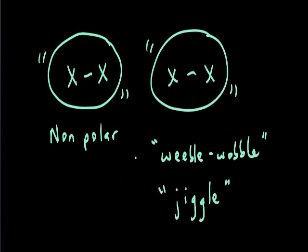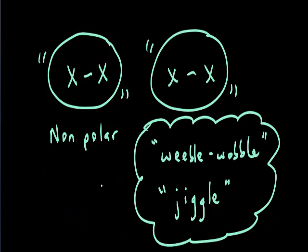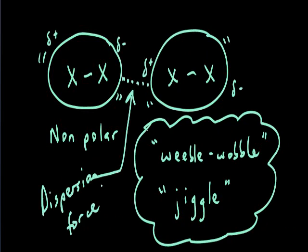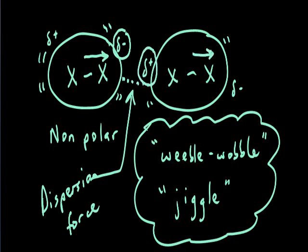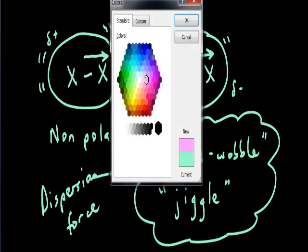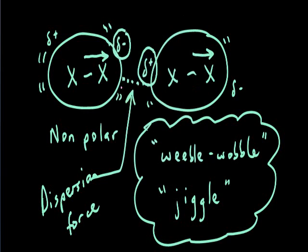Nonpolar molecules can create dispersion forces because every electron cloud has a little jiggle to it that creates these temporary charges. The electron density temporarily shifts to one side, creating a slight negative on one side, which induces a neighboring molecule to shift its electron density, creating a slight positive. There's then a slight attraction between the particles — this is the dispersion force.